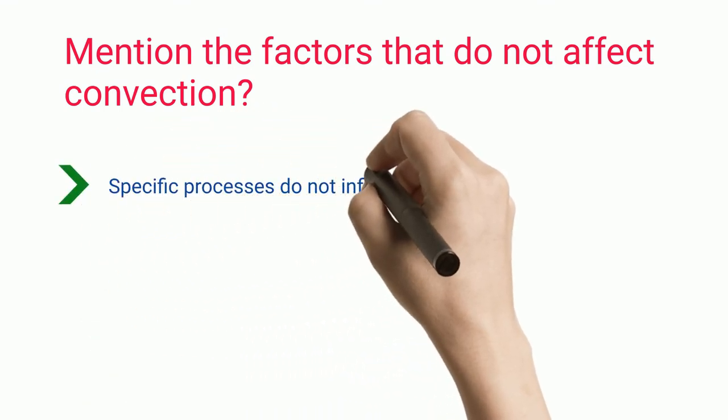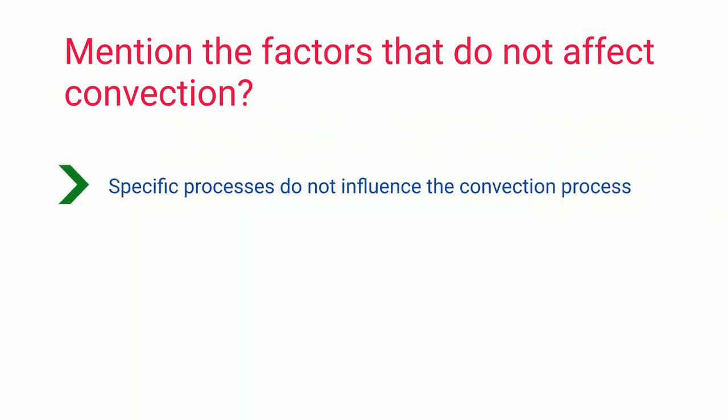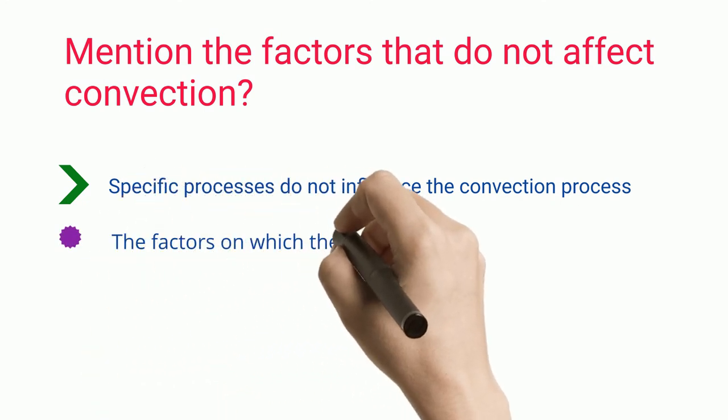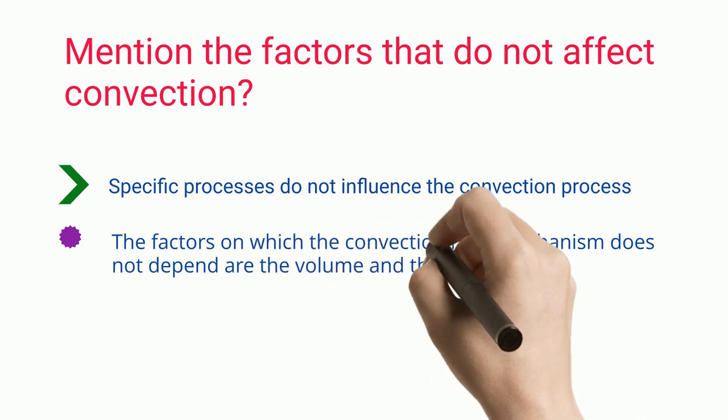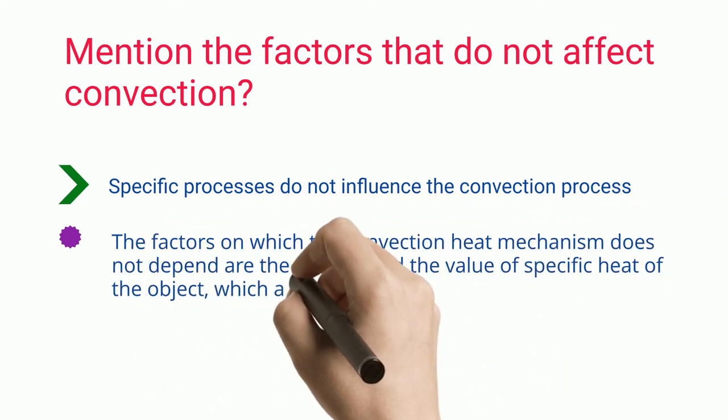Mention the factors that do not affect convection? Specific processes do not influence the convection process. The factors on which the convection heat mechanism does not depend are the volume and the value of specific heat of the object, which acts as a medium of heat transfer.